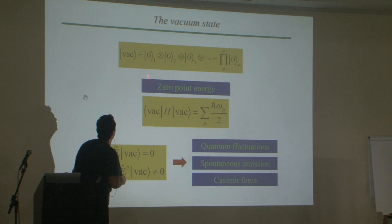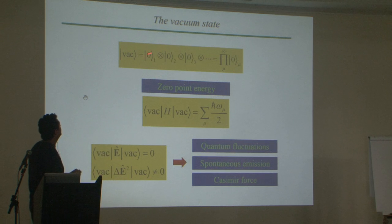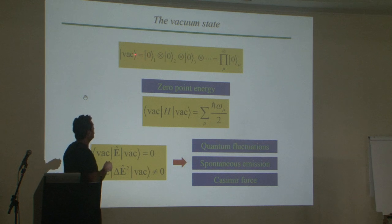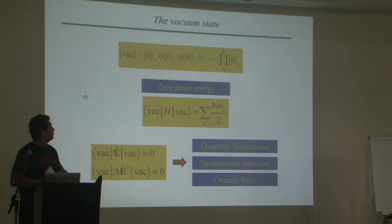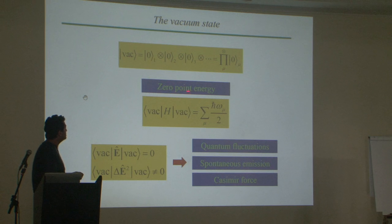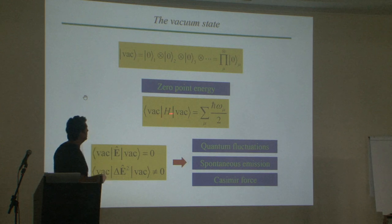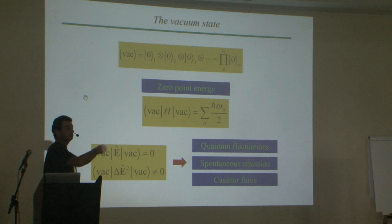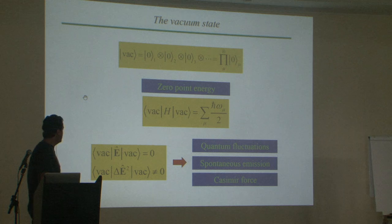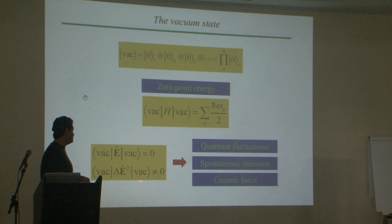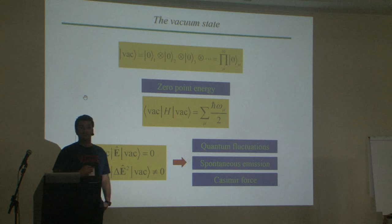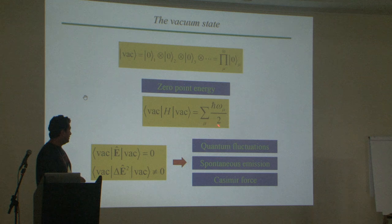In this Fock basis, we have the vacuum state, which corresponds to no excitations in all modes — completely vacuum. Associated with the vacuum is the so-called zero-point energy, which is the expectation value — the eigenvalue of the electromagnetic field Hamiltonian — and it corresponds to a zero-point energy for every mode in the field. This vacuum energy gives rise to no mean-value field; however, there are fluctuations, and these fluctuations justify the zero-point energy.